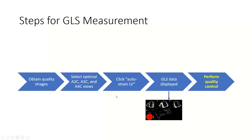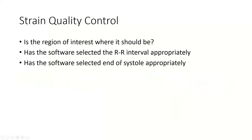Now let's talk about quality control. Quality control has three main components: making sure our region of interest is set appropriately with appropriate tracking, making sure the software has appropriately selected the cardiac cycle, and making sure the software has timed end systole correctly. All of these — the region of interest, the RR interval, and the selection of end systole — are done automatically, so our job is just to make sure they were done correctly.